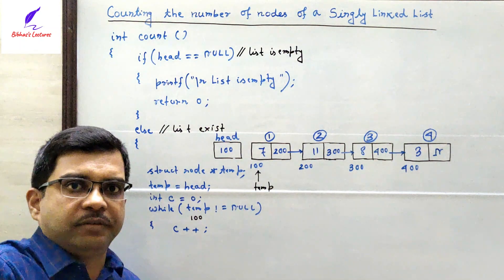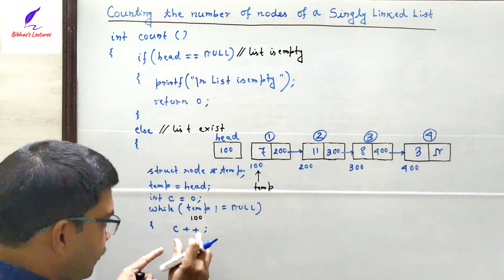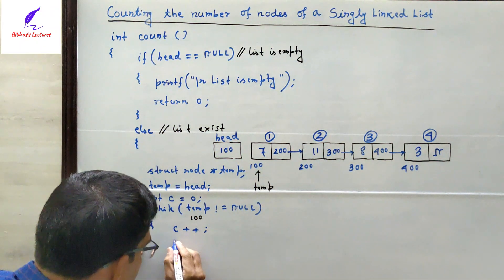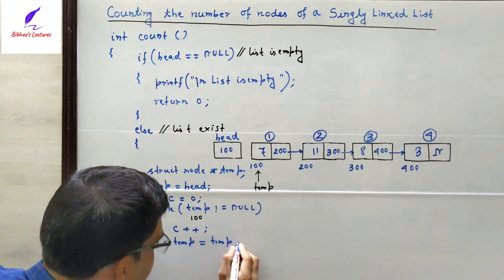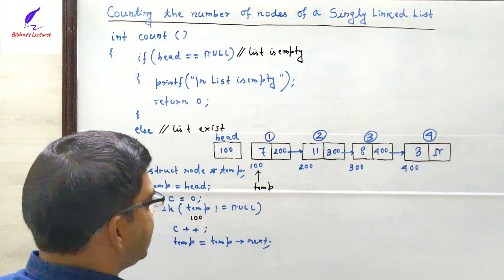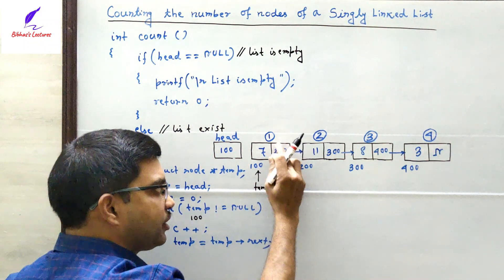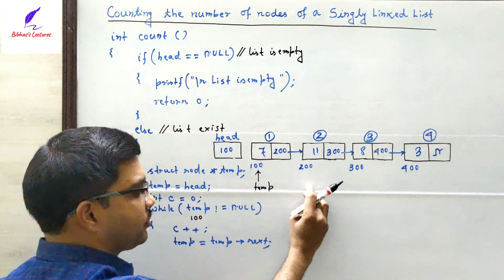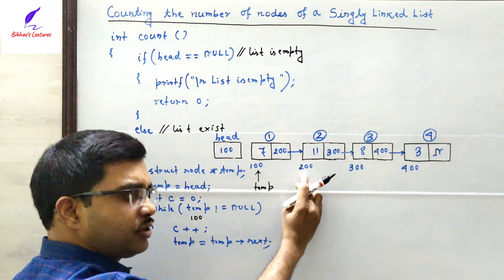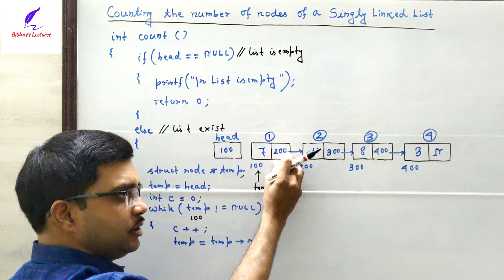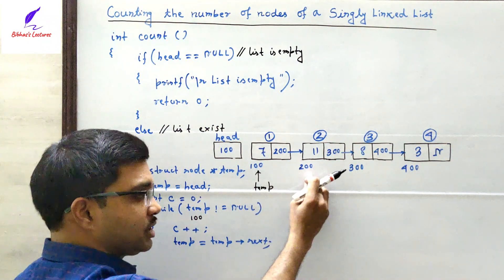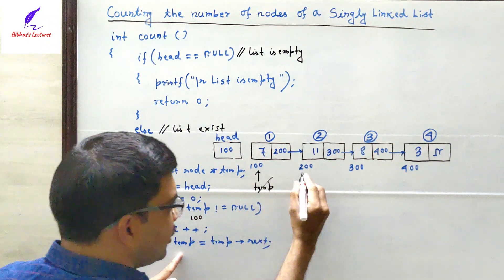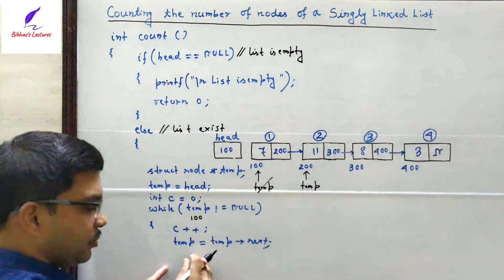After counting this node, we have to shift temp from the first node to the second node. We write temp = temp->next. Currently temp is pointing to 100; temp->next contains 200, which is the address of the second node. So temp will be shifted from the first node to the second node. As I told you in the previous video, if temp is pointing to the first node, temp->next is pointing to the second node, because in the next part of temp we have stored the address of the next node, which is 200.